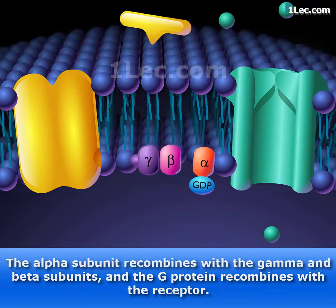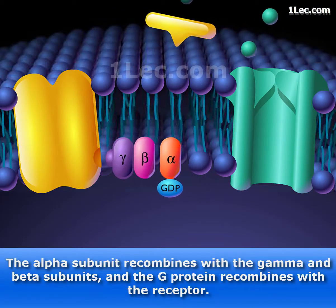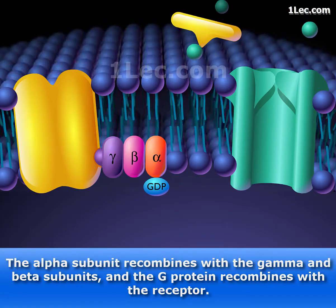The alpha subunit recombines with the gamma and beta subunits, and the G-protein recombines with the receptor.